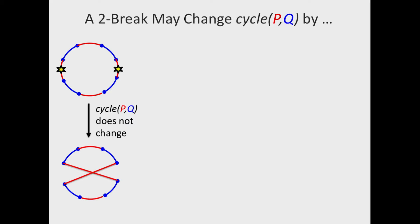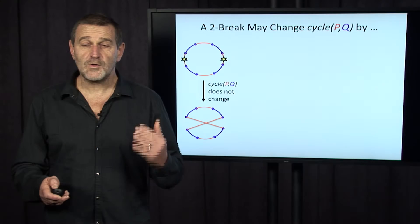Well, there are different scenarios depending on which two red edges from the breakpoint graph two-break affects. Every two-break removes two red edges.